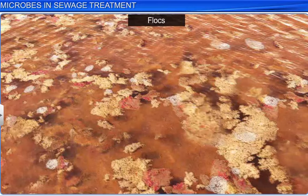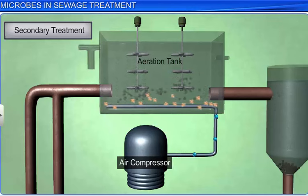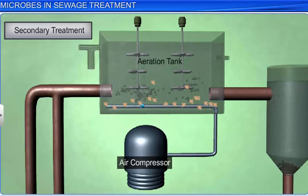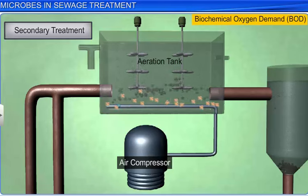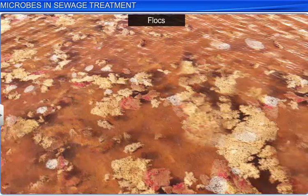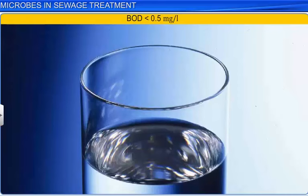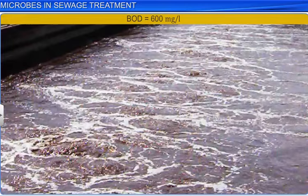In the presence of oxygen, these growing aerobic microbes consume the organic matter present in the effluents. This secondary treatment reduces the BOD, or biochemical oxygen demand, of water. BOD is an important measure of water quality. It refers to the amount of oxygen needed by bacteria and other microbes to oxidize all the organic matter in one liter of water. The BOD of drinking water should be less than 0.5. However, the BOD of raw sewage can be as high as 600 milligrams per liter.